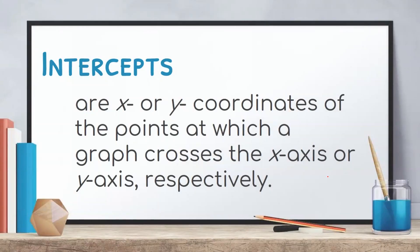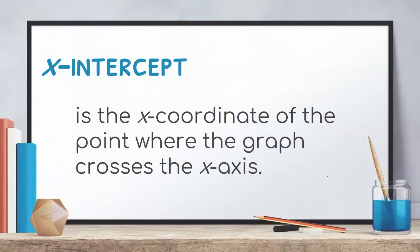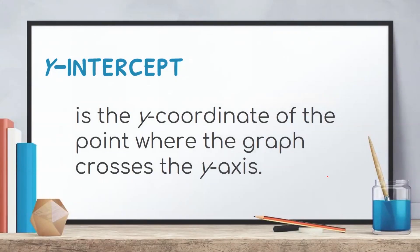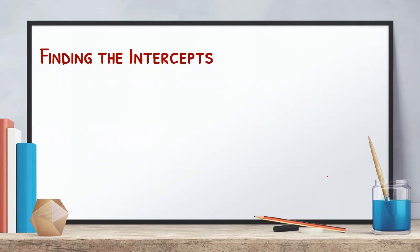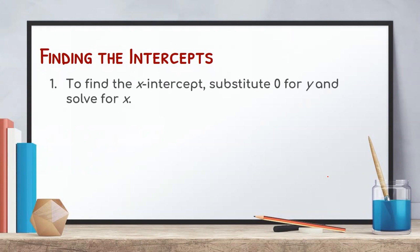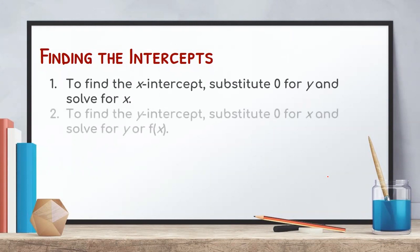Let us go to the intercepts of rational functions. Intercepts are the x and y coordinates of the points at which a graph crosses the x-axis or the y-axis respectively. We have two intercepts: the x-intercept and the y-intercept. The x-intercept is the x-coordinate of the point where the graph crosses the x-axis. To find the x-intercepts, substitute 0 for y and solve for x. To find y-intercepts, substitute 0 for x and solve for y.